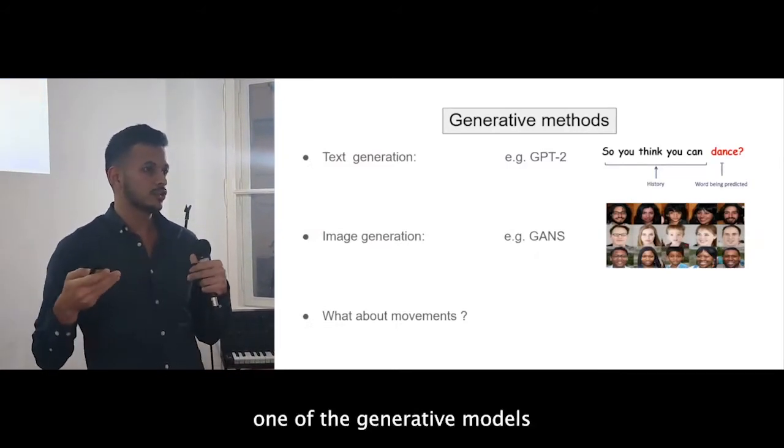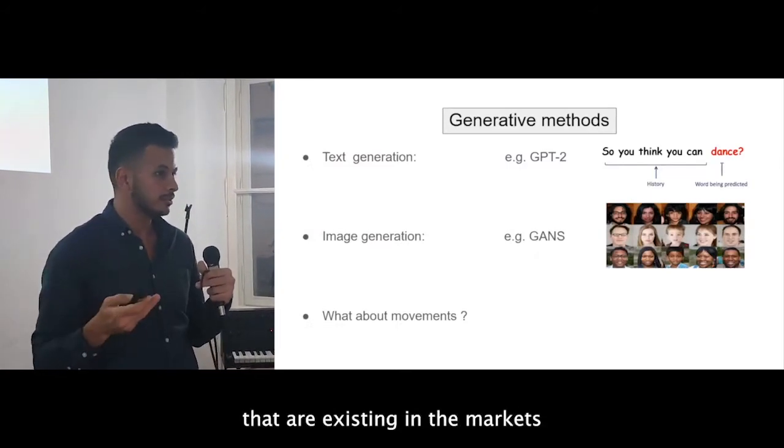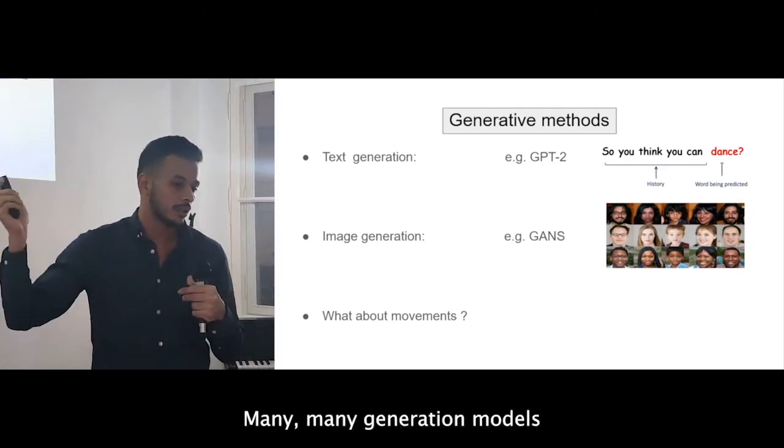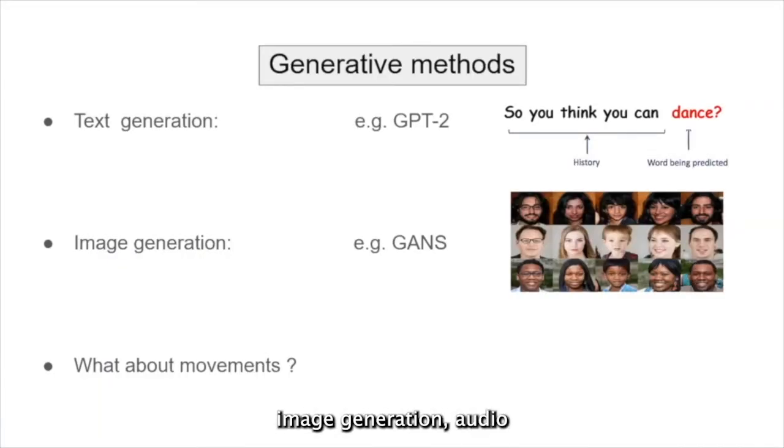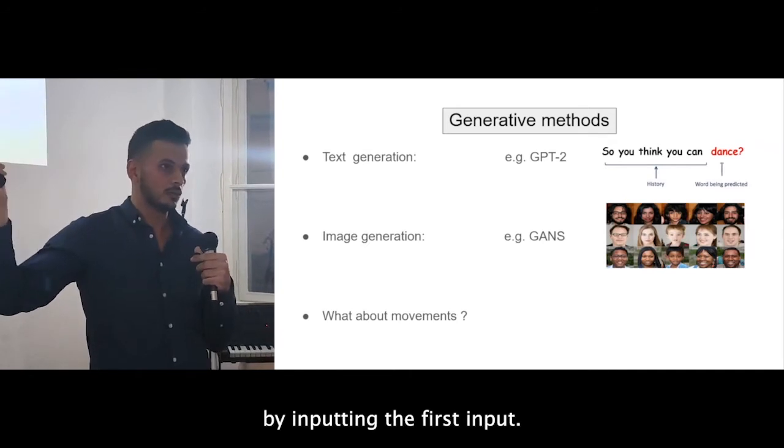One of the generative models that are existing in the market right now, many generation models, like text generation, image generation, audio, like text generation, like GPT-2, for example. Everyone is using it right now in Google or emails or chat. It predicts what you want to say by inputting the past input.